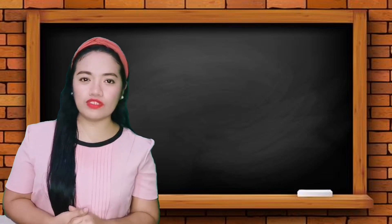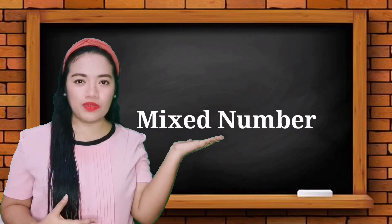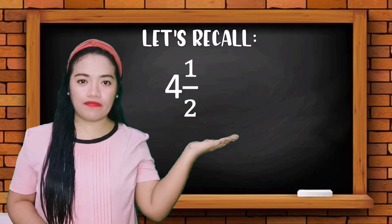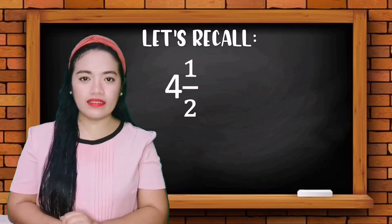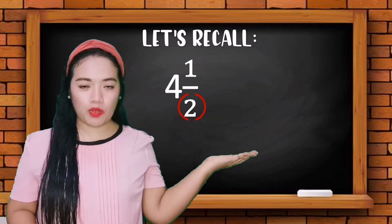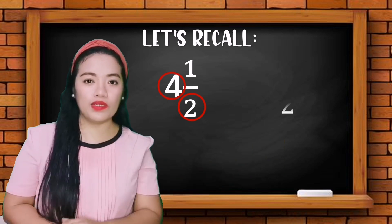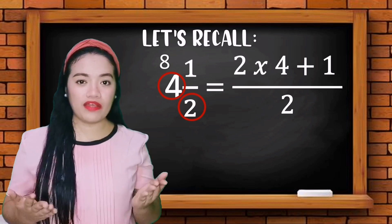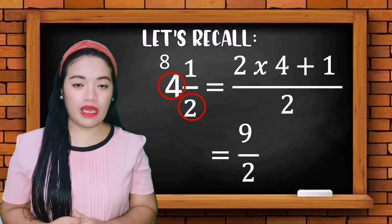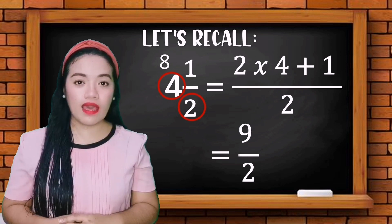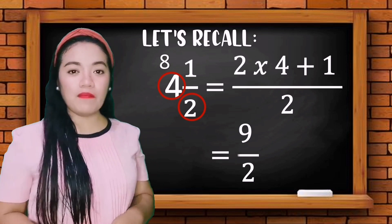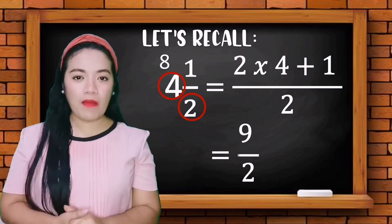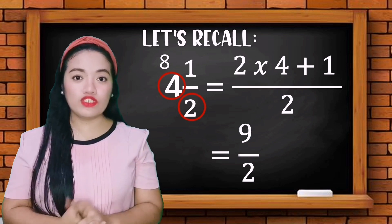Let us recall first how to change a mixed number into an improper fraction. Example: four and one half. To do that, multiply the denominator by the whole number — two times four is eight — then add the numerator: eight plus one is nine. Copy the denominator, which is two. The improper fraction is now nine over two.